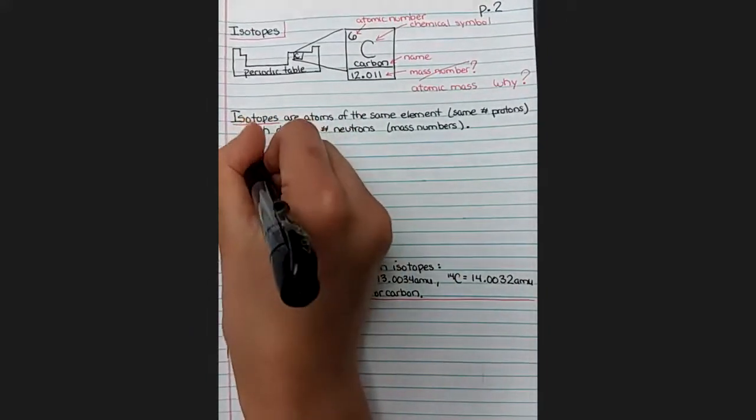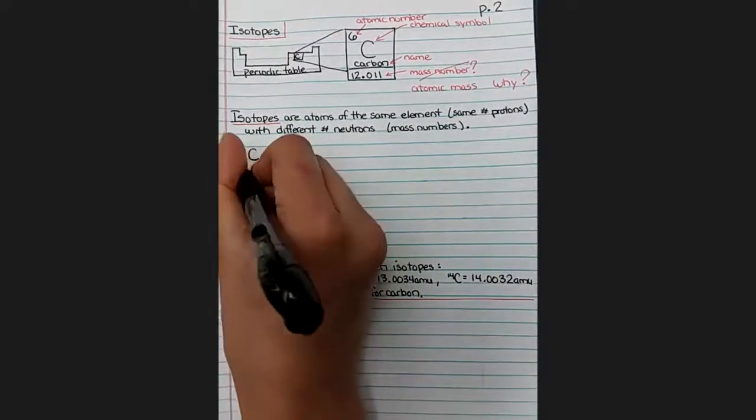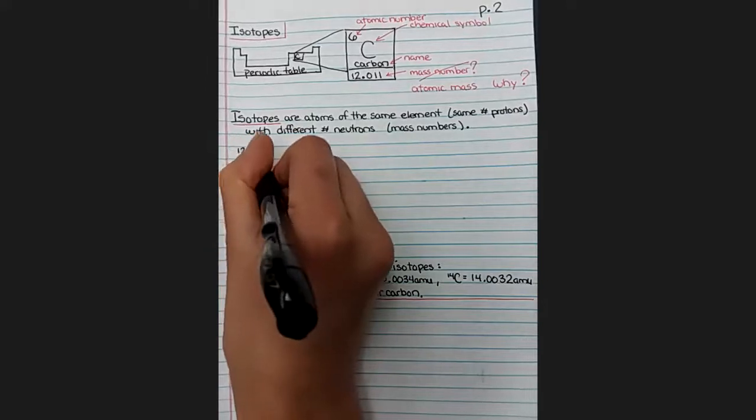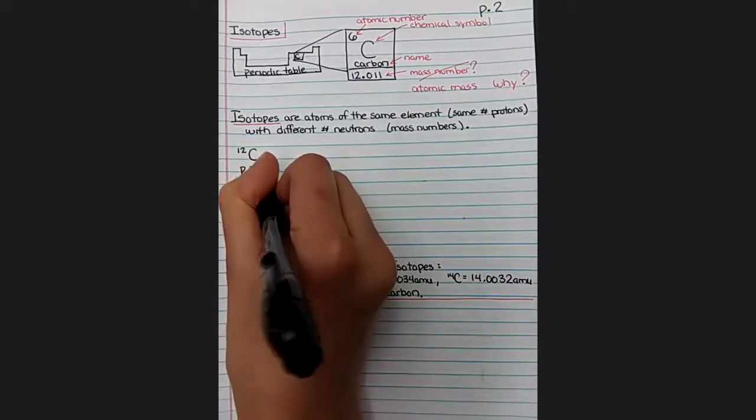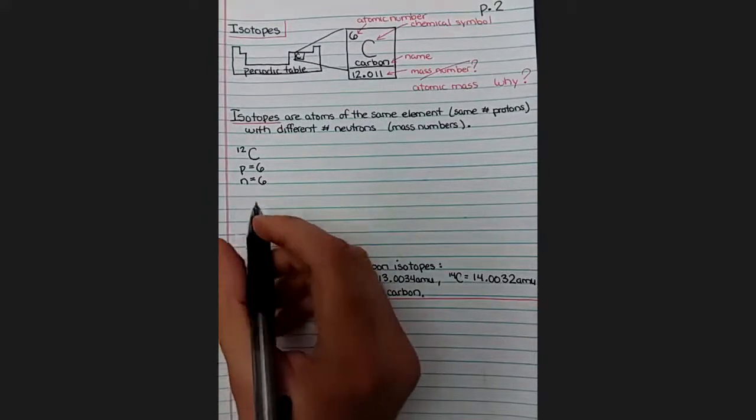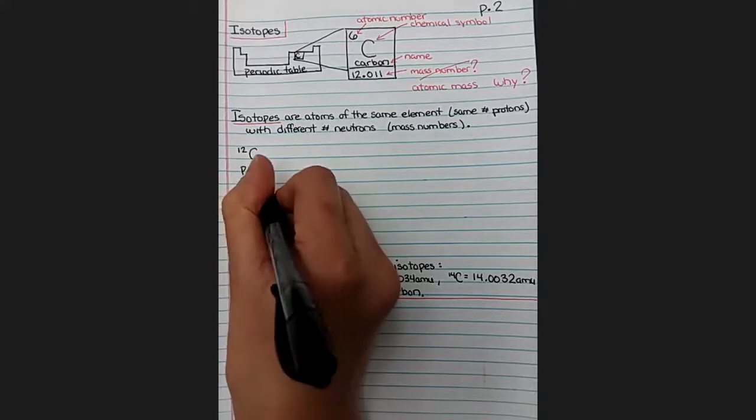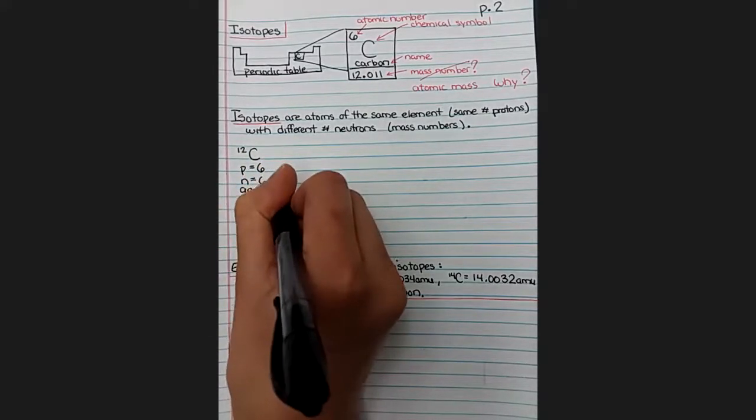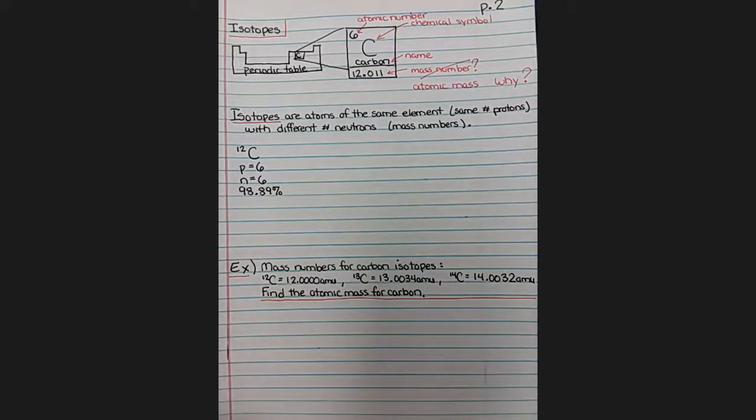So let's keep going with carbon, because we're kind of on a roll with carbon here. The most common isotope of carbon is carbon-12, the one we've been talking about. And that carbon has six protons, because every carbon has six protons. And it has six neutrons, because six plus six equals a mass number of 12. And then we can also write down here the percent abundance. Because carbon is found all over the Earth and the entire universe. And out of all of the carbon atoms in the universe, 98.89% of them are this particular kind of carbon atom, a carbon-12.